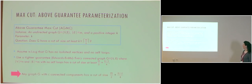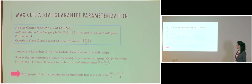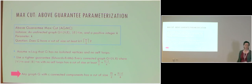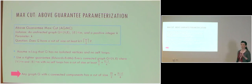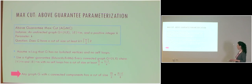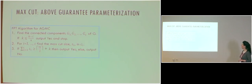The Edwards-Erdős guarantee asserts that in a connected graph with n vertices and m edges with no self-loops, there is a cut of size m over 2 plus (n minus 1) over 4. If we have c connected components, then the cut size is at least m over 2 plus (n minus c) over 4, which follows by summing the lower bound for each connected component.